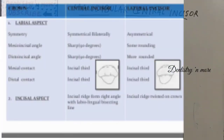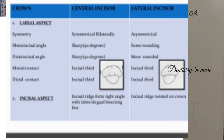Comparing mandibular central and lateral incisors: on the labial aspect, the symmetry is bilateral on the central but asymmetrical on the lateral. The mesio-incisal and disto-incisal angles are sharp in the central, but more rounded — especially the disto-incisal — in the lateral. The contact area is at the incisal third for both mesial and distal, on both teeth. On the incisal aspect, the incisal ridge is at right angles with the labiolingual bisecting line in the central, but the incisal ridge is twisted on the crown in the lateral incisor.